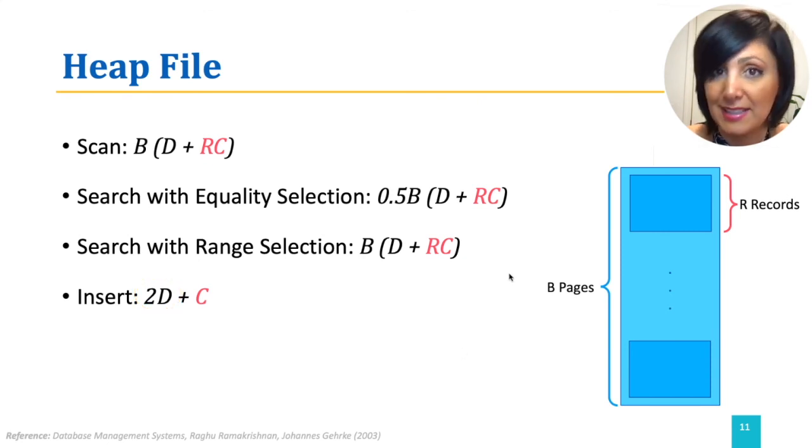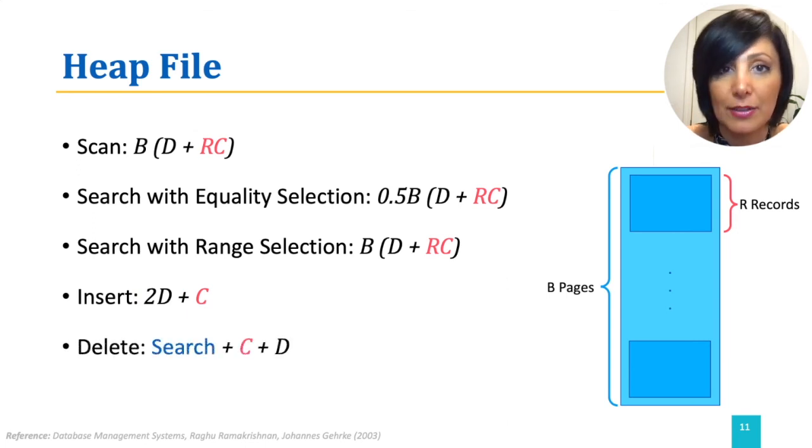And finally, delete. Deleting a heap file needs finding a record to delete, loading the page that contains the record, performing the record processing, which is removing it, and writing the page with the deleted record back. This is cost of search, plus C for record processing, plus D for writing the page back. Assuming no additional work is involved in maintaining the packed format, which is an assumption for simplicity.